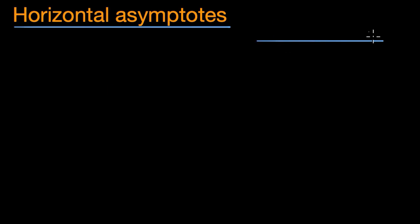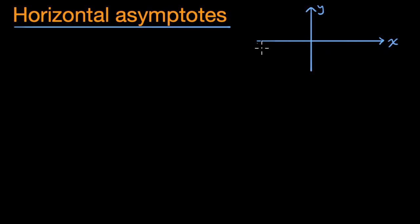What we're going to do in this video is talk a little bit about horizontal asymptotes. So what are we even talking about? Well, you could imagine some type of a function — I'm going to draw the axes here. That's our y-axis, this is our x-axis. When we think about horizontal asymptotes, we're thinking about what happens if the function gets very, very positive or very, very negative.